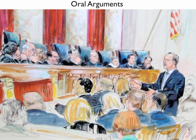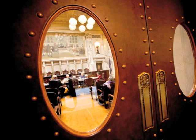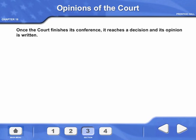Once the Supreme Court accepts a case, it sets a date on which lawyers on both sides will present oral arguments. Amicus curiae briefs are written documents filed with the court before oral arguments begin. The Chief Justice presides over a closed-door conference in which justices present their views on the case at hand. Once the court finishes its conference, it reaches a decision and its opinion is written.